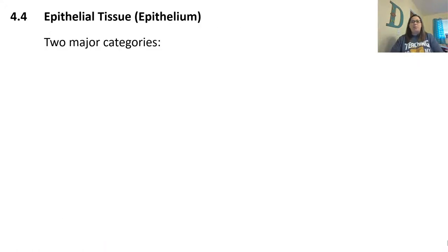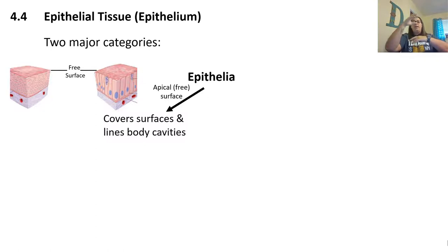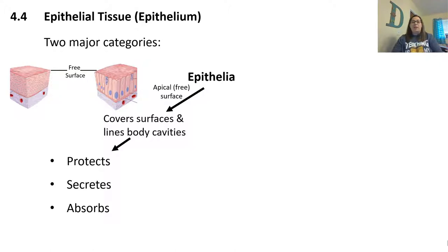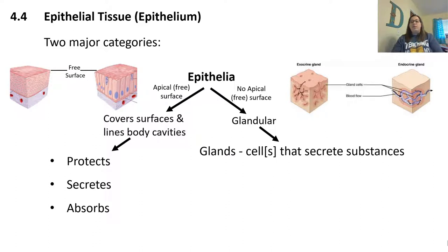Focusing on epithelial tissue, there are two major categories. First, epithelium that covers surfaces or lines body cavities — these tissues have an apical or free surface, meaning the bottom is grounded on other cells or tissues, but the top is exposed to an opening or the environment. These offer protection, secretion, and absorption. The second category, epithelial tissue with no free surfaces, is known as glandular epithelial tissue, which creates glands that secrete certain substances.